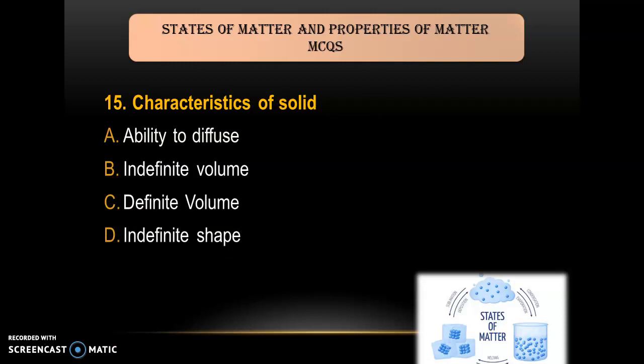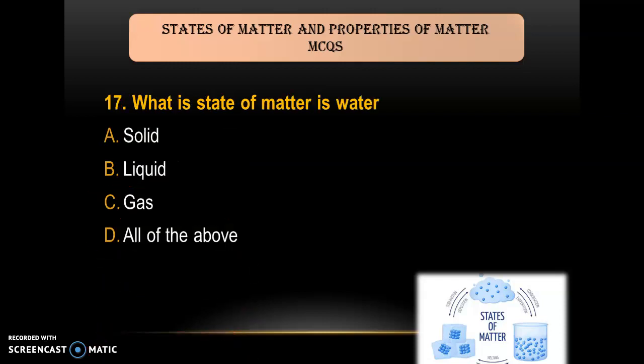Question 16: A characteristic of solids is — A) ability to diffuse; B) indefinite volume; C) definite volume; D) indefinite shape. As we know, a solid has a definite volume and all other listed properties are not characteristics of solids. So the answer is C — definite volume.